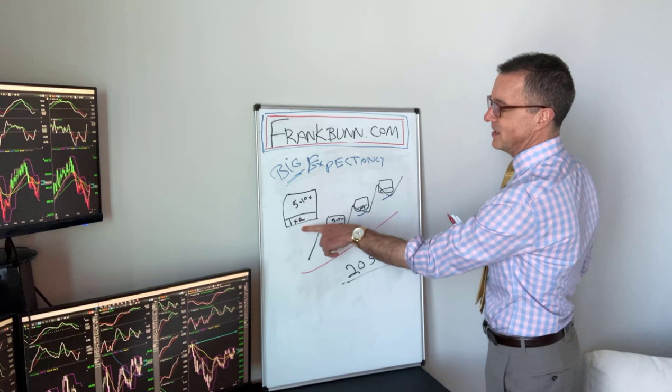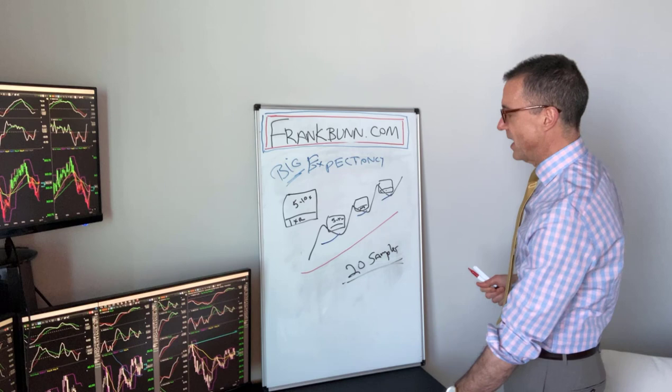So think about that as you learn the game — master big expectancy and master a risk game where you're consistently achieving five to 10 times your risk. Long term, it's an easy way to win the game. Think about big expectancy when you're talking about your positions and you'll be ahead of the game. Have a good day.